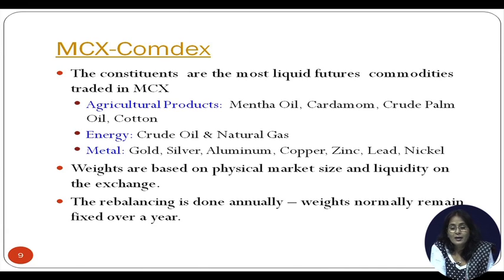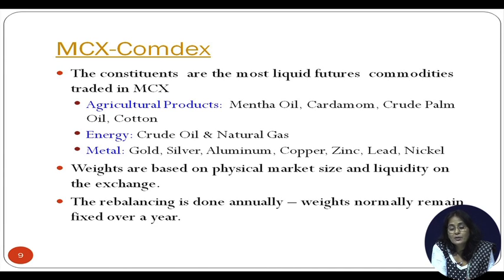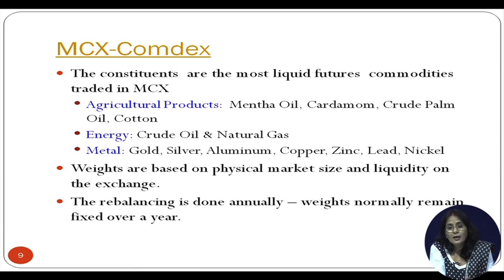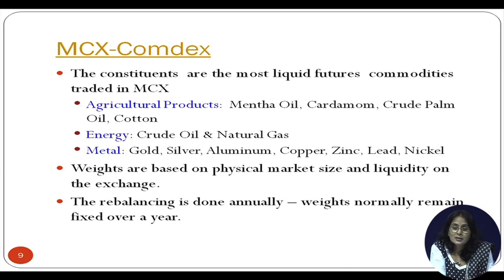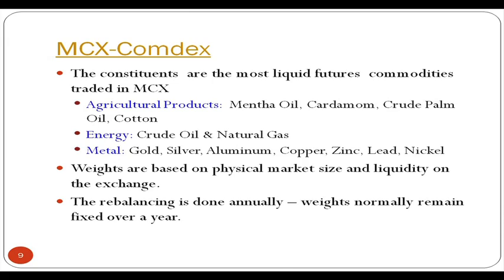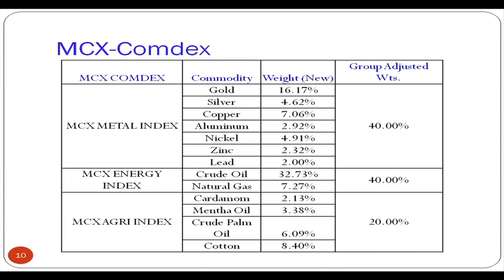For MCX Comdex, weights are determined by physical market size and exchange liquidity. Both parameters are taken into consideration to assign weights to specific commodity futures. Rebalancing is done annually — unlike NCDEX Dhania, which is rebalanced every three months — so weights remain fixed for a given year unless a specific situation arises.